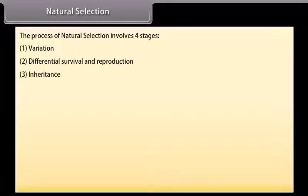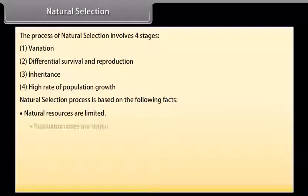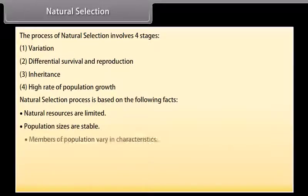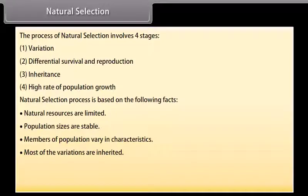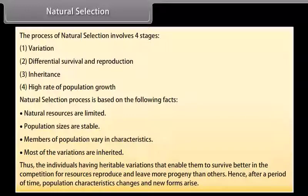The process of natural selection involves four stages: variation, differential survival and reproduction, inheritance, and high rate of population growth. Natural selection is based on the facts that natural resources are limited, population sizes are stable, and members of a population vary in characteristics. Most variations are inherited, so individuals with heritable variations that enable better survival reproduce and leave more progeny. After a period of time, population characteristics change and new forms arise.